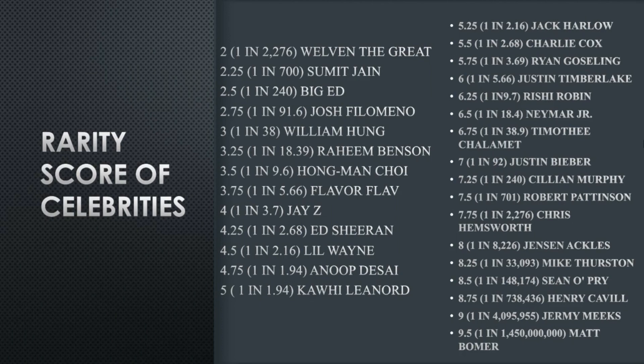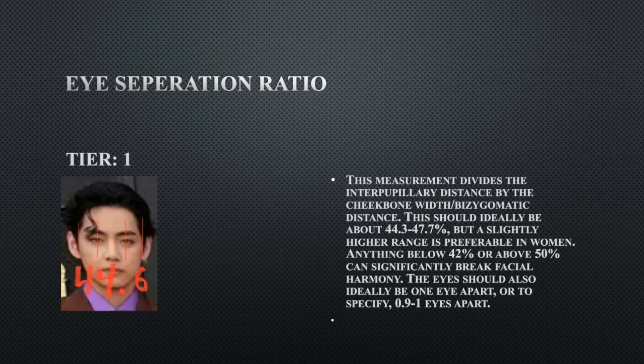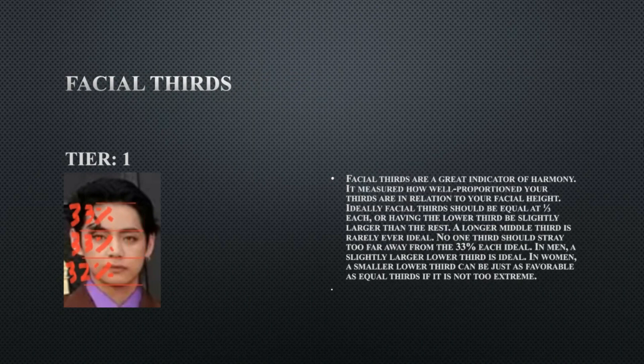Here are the ready scores of other celebrities so you can compare. His eye separation ratio is 44.6 — this is tier one at the lower end, but it's perfect. It goes from the pupils compared to the distance between the cheekbones, and that is good.